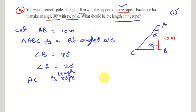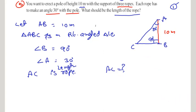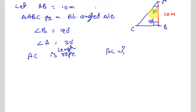We need to find the length AC. Observing the diagram carefully, in triangle ABC, with respect to angle A, we know the adjacent side AB and we need to find the hypotenuse AC. The trigonometric ratio that uses adjacent side and hypotenuse is cosine, so we apply cos A.